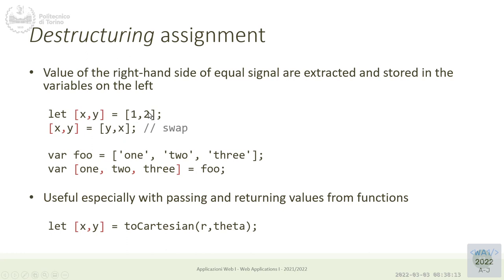On the right-hand side we have an array-type expression. On the left-hand side we have a syntax that looks like an array. What it's telling us is that the array on the right-hand side will be destructured or separated, and the first element will go to X and the second element will go to Y. So it's a shorthand notation for saying X equals the first element of the array and Y equals the second element of the array, but we're doing that in one single instruction.